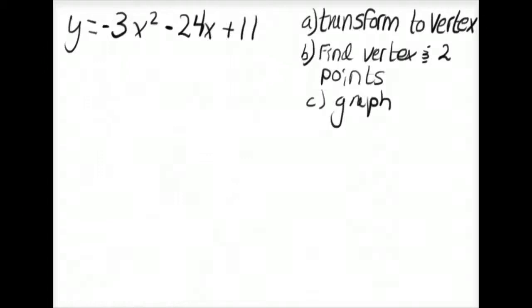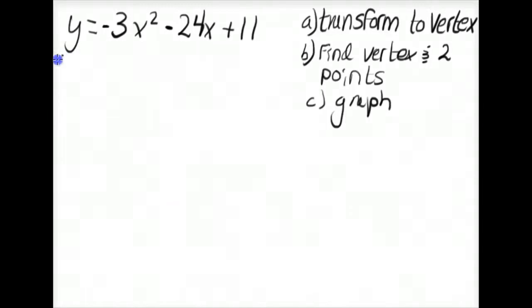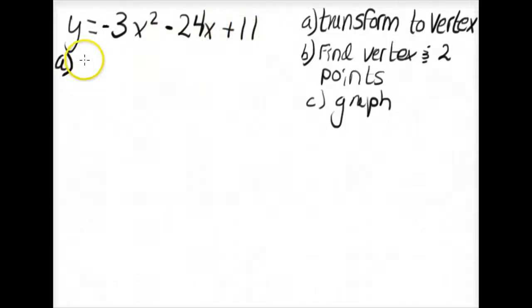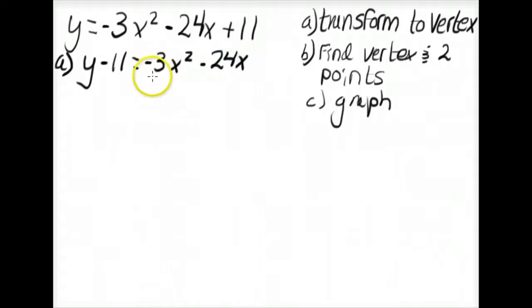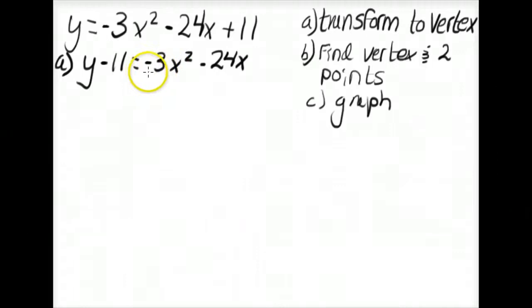Now consider the quadratic function y equals negative 3x squared minus 24x plus 11. We want to transform this to vertex form, find the vertex along with two other points, and graph it. First, subtract 11 from both sides to get y minus 11 equals negative 3x squared minus 24x. To complete the square, we need the x squared term to have a coefficient of 1, so we factor out negative 3.